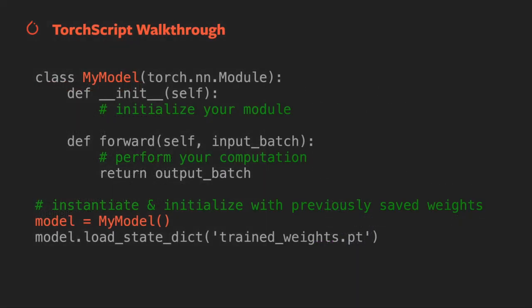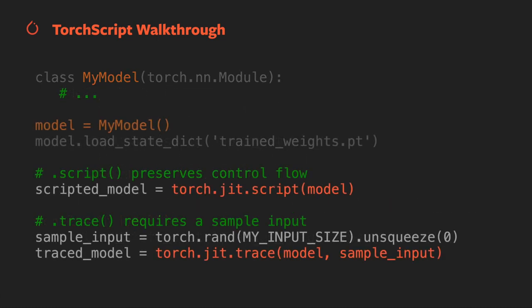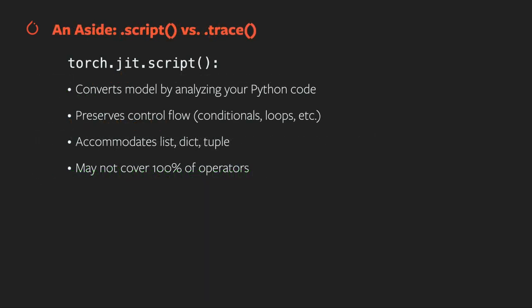Let's walk through the process of using TorchScript in more detail. The process starts with the model you've built in Python and trained to the point of readiness for deployment. The next step is to convert your model to TorchScript using either torch.jit.script or torch.jit.trace. torch.jit.script converts your model by directly inspecting your code and running it through the TorchScript compiler — it preserves control flow, which you'll need if your forward function has conditionals or loops, and it accommodates common Python data structures. However, due to limitations of Python operator support in the TorchScript compiler, some models won't be convertible using torch.jit.script.